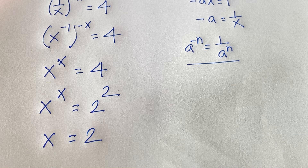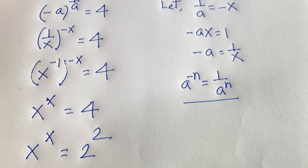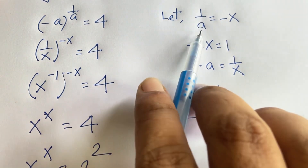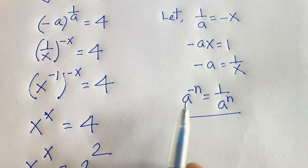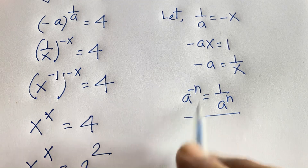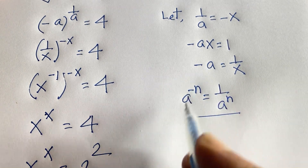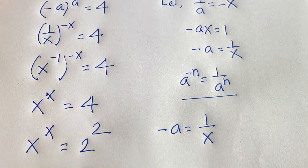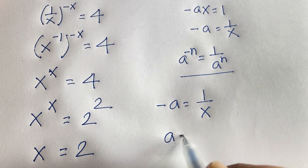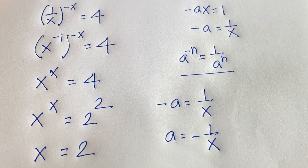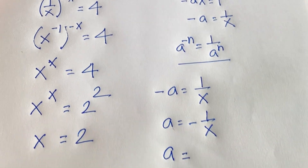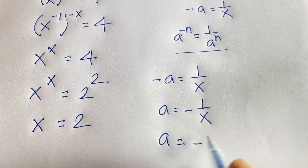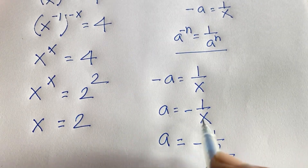We found x equals 2. Recalling our substitution, minus a equals 1 over x, so a equals minus 1 over x. Since x equals 2, our final answer is a equals negative one half.